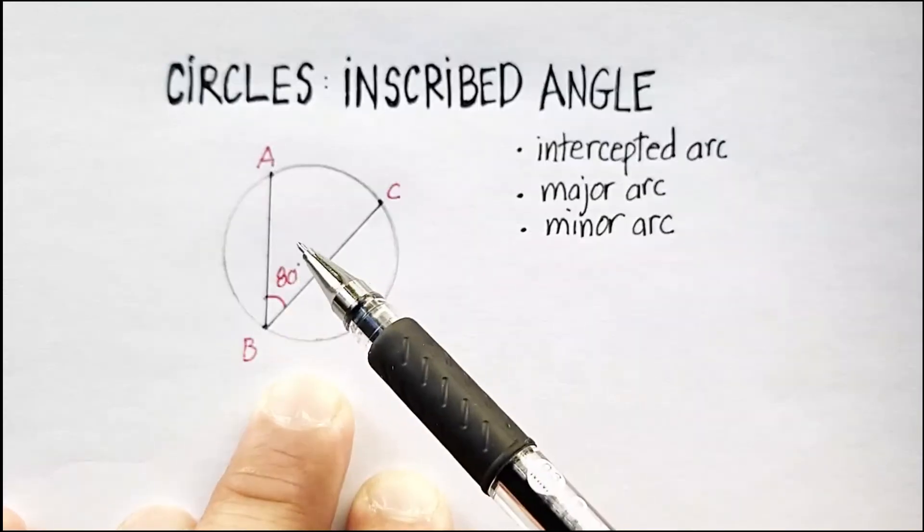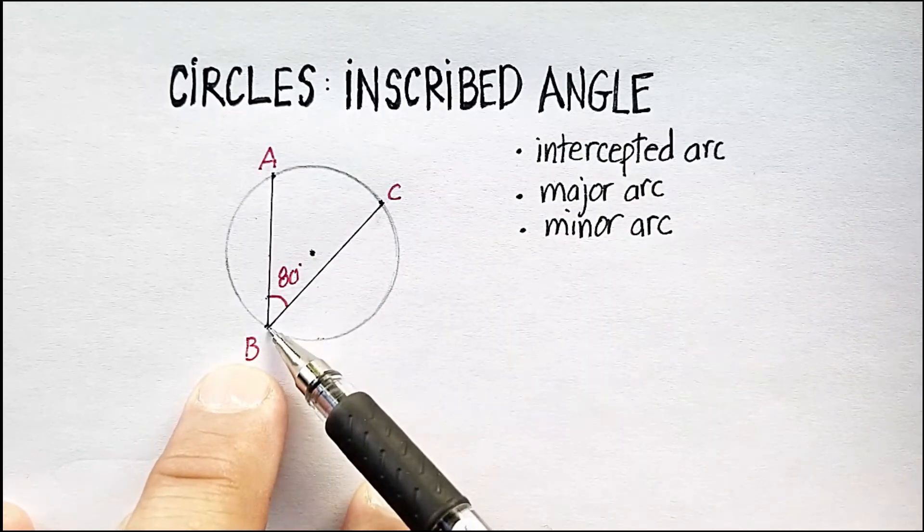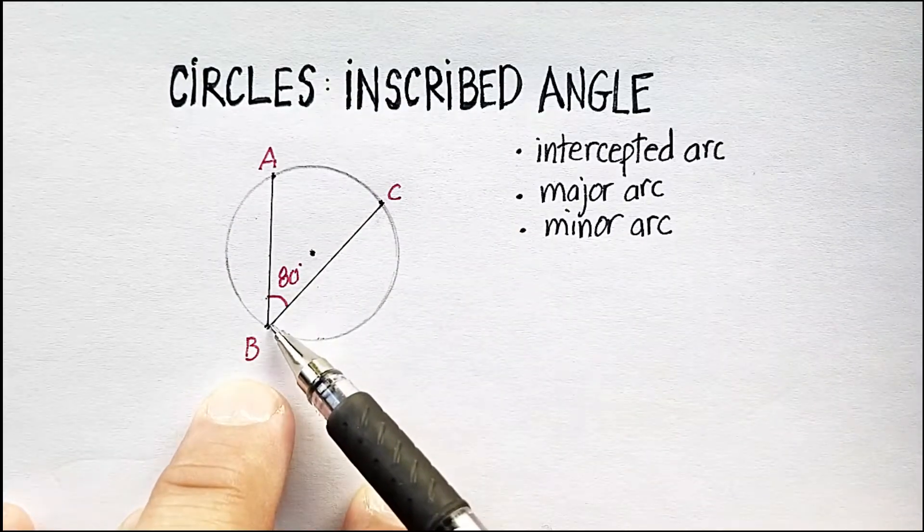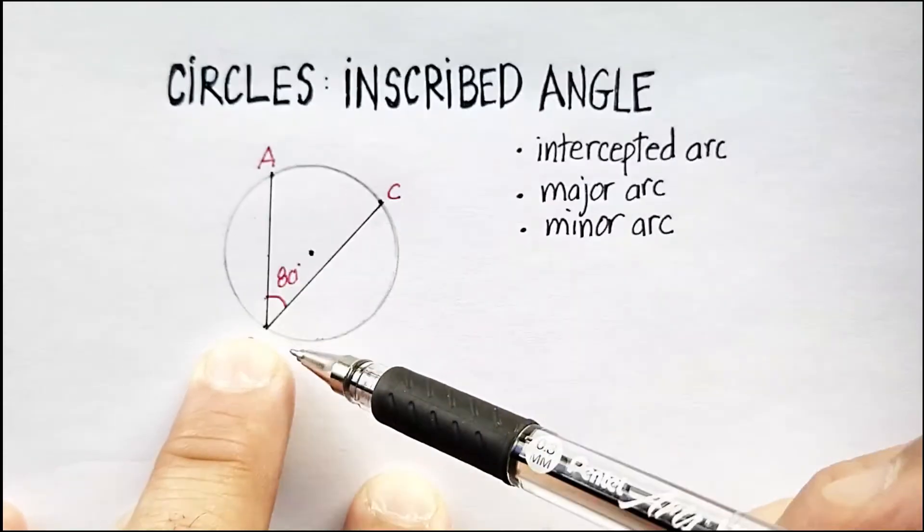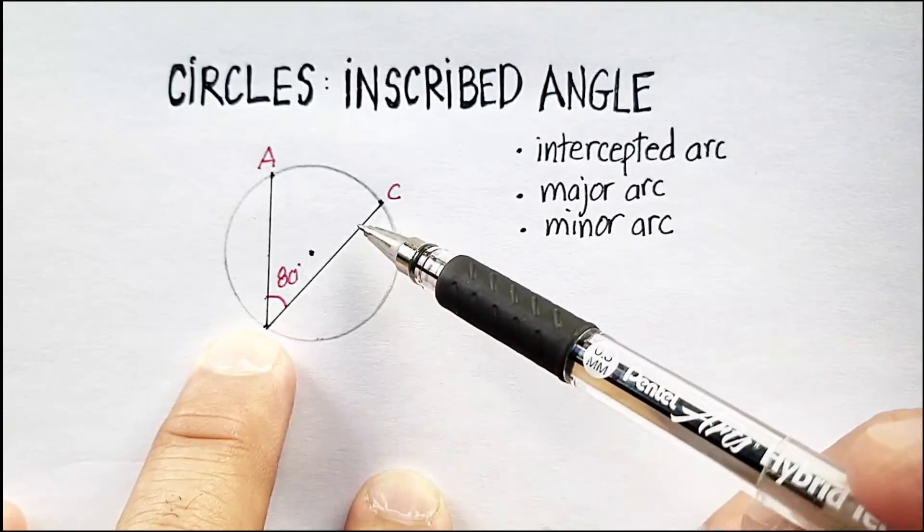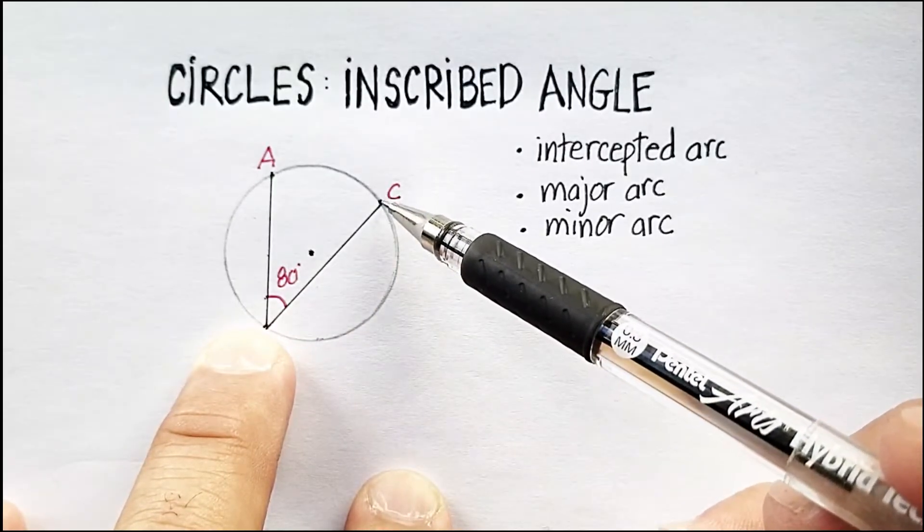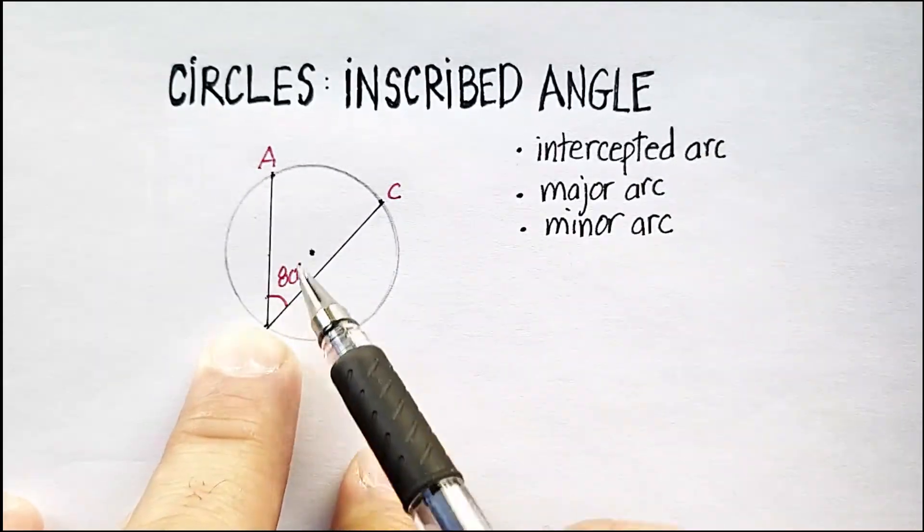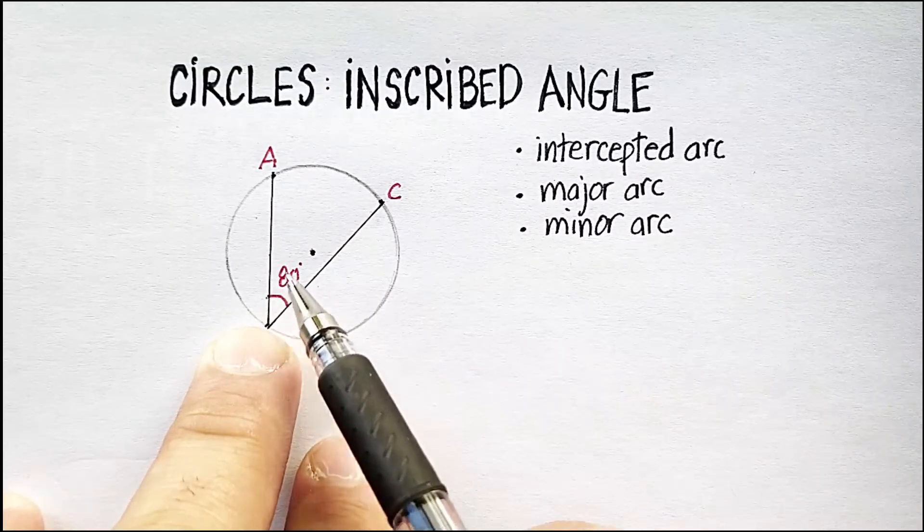So if you take a circle, an inscribed angle has the vertex on the circumference of the circle. So in this case it would be at B. Then you have two cords that go out from that vertex and creates an angle. And the cord, remember, goes out to the circumference of the circle in either direction. So I have an angle basically here. Now this particular angle is given to me as 80.